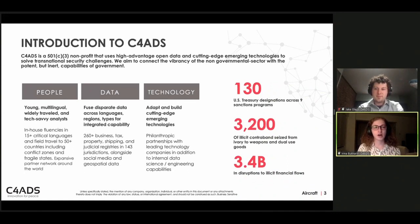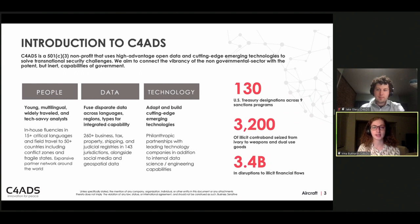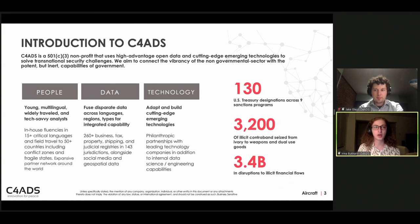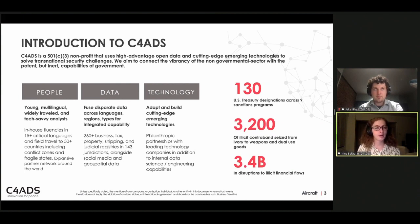C4ADS is a nonprofit based in Washington, D.C., and we focus on using publicly available information — anything you can find in traditional open source or data you can buy — combined with emerging technologies to investigate and disrupt transnational illicit networks, as well as broader transnational security challenges. We position ourselves at the center of the non-governmental and governmental space, working very closely with journalists.